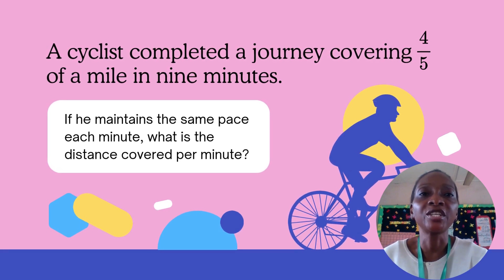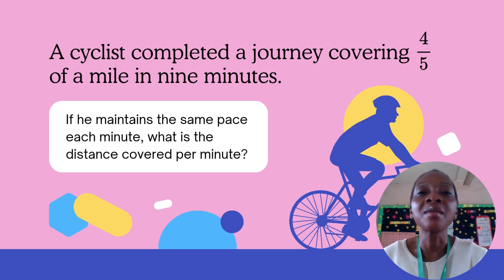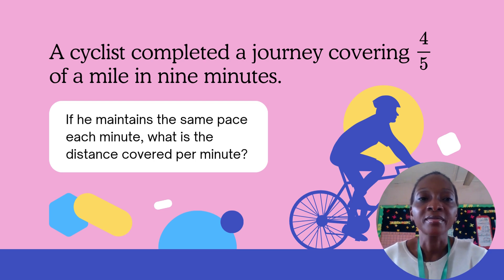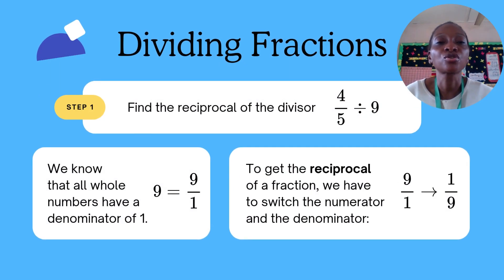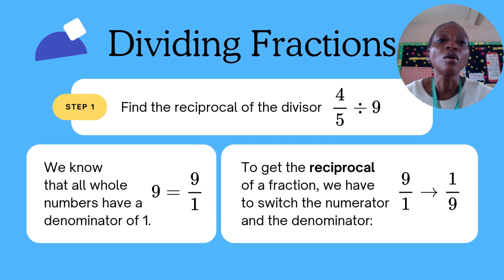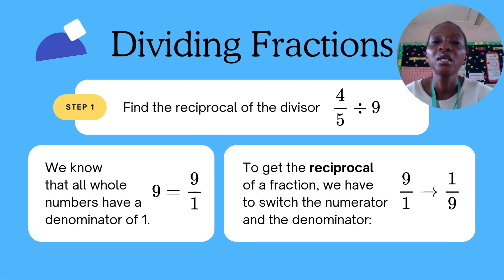Another example using a real life scenario: a cyclist completed a journey covering four over five of a mile in nine minutes. If he maintains the same pace each minute, what is the distance covered per minute? To solve this, step one is to find the reciprocal of the divisor. Your divisor is nine, so we have four over five divided by nine. We know whole numbers always have a denominator of one — nine becomes nine over one.